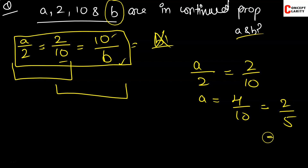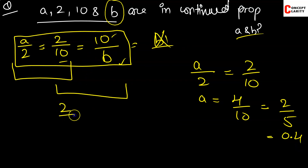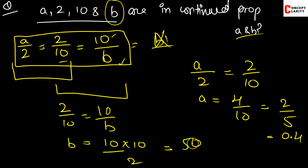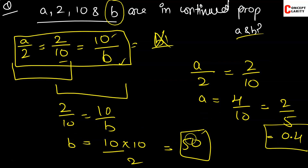For B's value, we write 2 by 10 is equal to 10 by B. Cross multiplying, B comes out to be 10 into 10 upon 2, which is 50. So A is 0.4 and B is 50. This is a simple basic question.